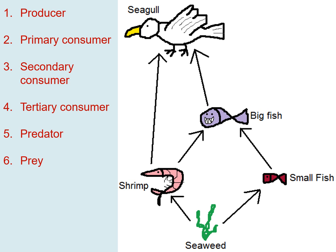Let's go through the answers. The producer in this food web is the seaweed — number one. The seaweed uses sunlight that comes through the water and produces its own food by photosynthesis. The primary consumers — things that eat plants and algae — are the shrimp and the small fish, so number two applies to both of them.